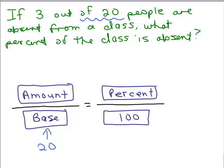So our amount is the other number. And we're looking for the percent. Notice it says what percent, so we can't put a number in that. So let's use a variable and I'm just going to use P. This is going to give us a proportion. 3 over 20, that's one fraction, equals P over 100.